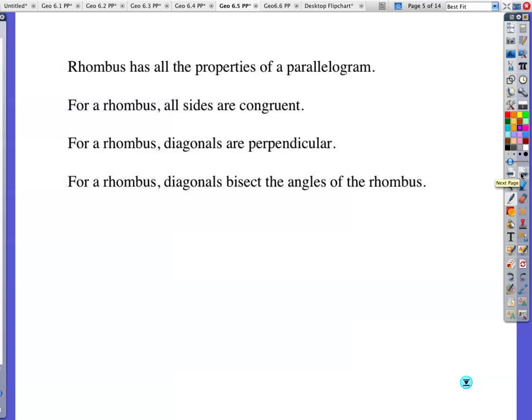Rhombus is all the properties of a parallelogram. So all the rules that go to parallelograms apply to rhombuses. I mean rhombi. And for a rhombus, all sides are congruent. For a rhombus, diagonals are perpendicular. And diagonals bisect the angles of a rhombus. This is basically, you don't have to rewrite this. This is the same statement as the page before.